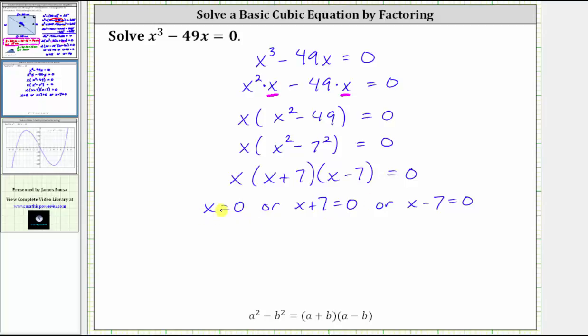And now we solve each of these equations for x. This equation is already solved for x. To solve for x here, we subtract seven on both sides, which gives us x equals negative seven. And solving this equation for x, we add seven to both sides, giving us x equals positive seven.